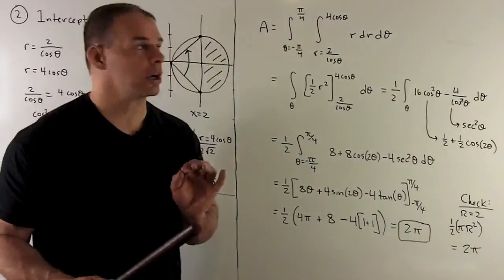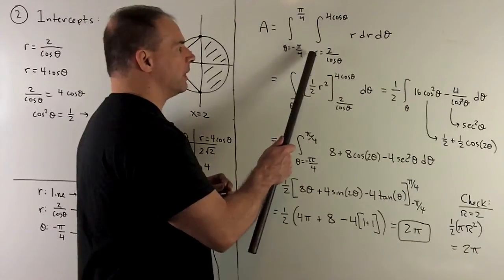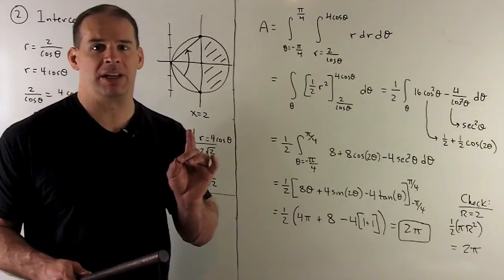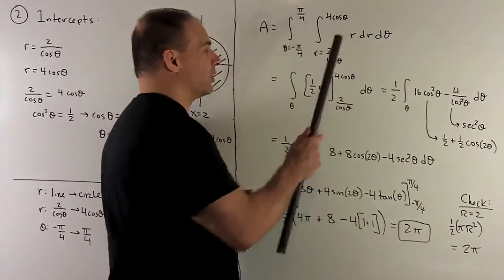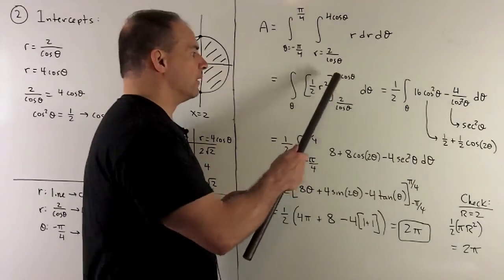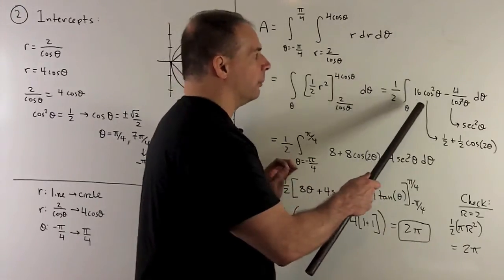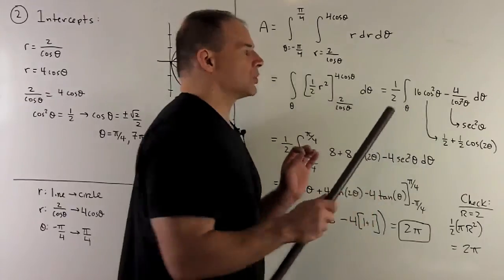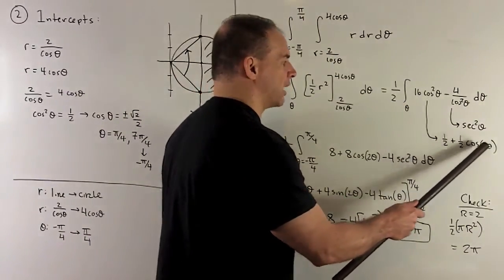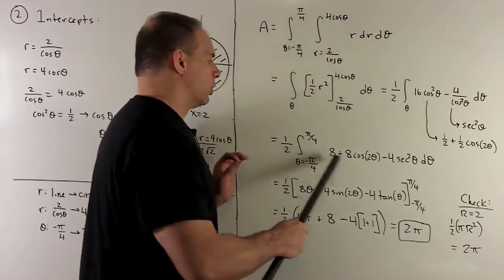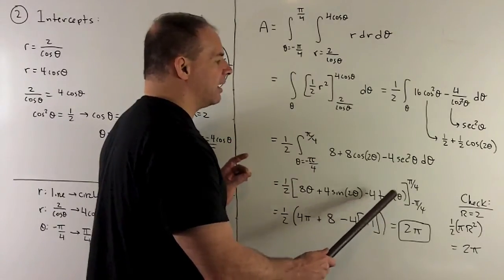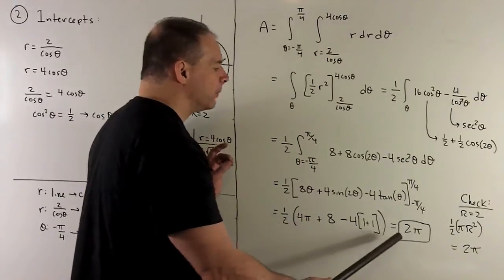Last step: set up the integral and do the work. The inner integral is with respect to r, going from 2/cosine theta to 4 cosine theta, which eliminates r and leaves everything in terms of theta. The antiderivative of r is one-half r squared. After evaluating the limits and taking the difference, we use the identity 1/cosine squared equals secant squared (whose antiderivative is tangent) and cosine squared equals one-half plus one-half cosine 2 theta. Loading in these substitutions and taking antiderivatives, then evaluating from minus pi/4 to pi/4 and taking the difference, what comes out is 2 pi.